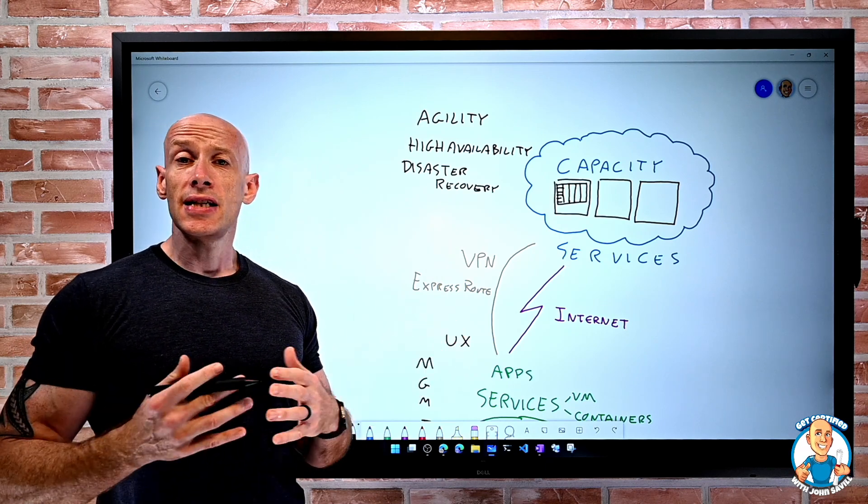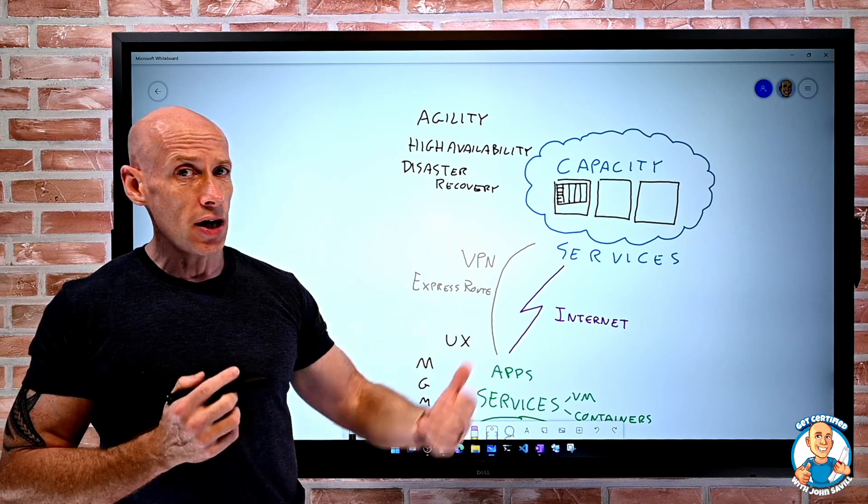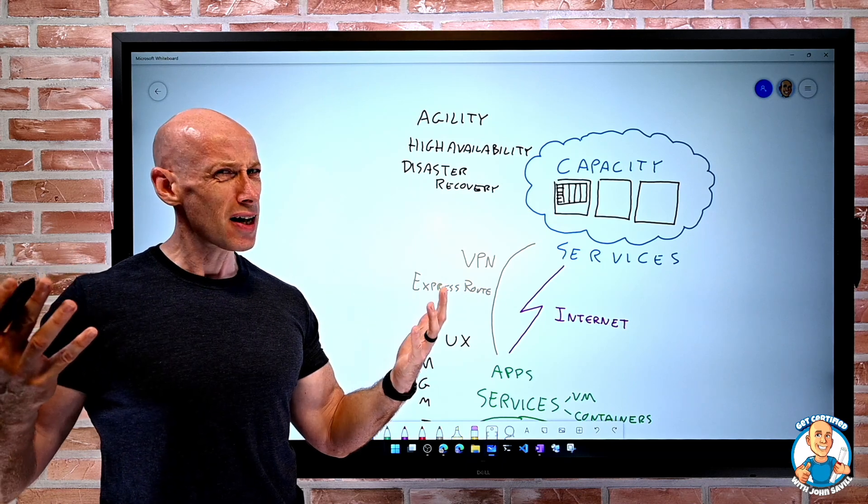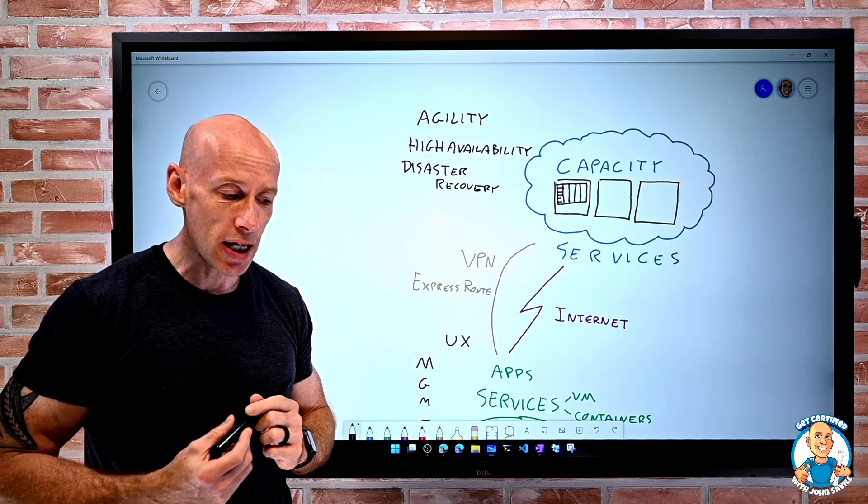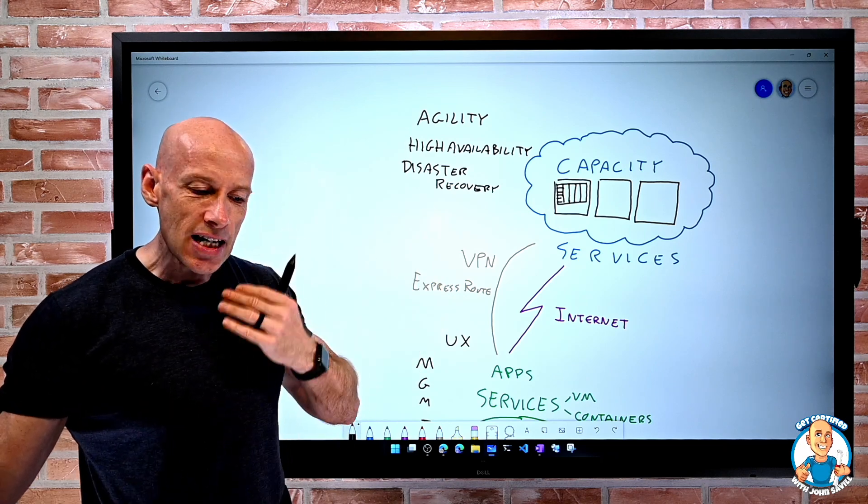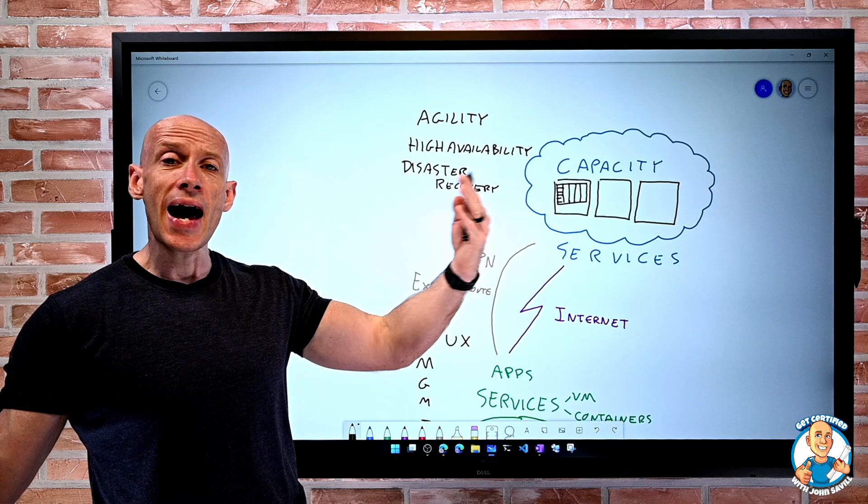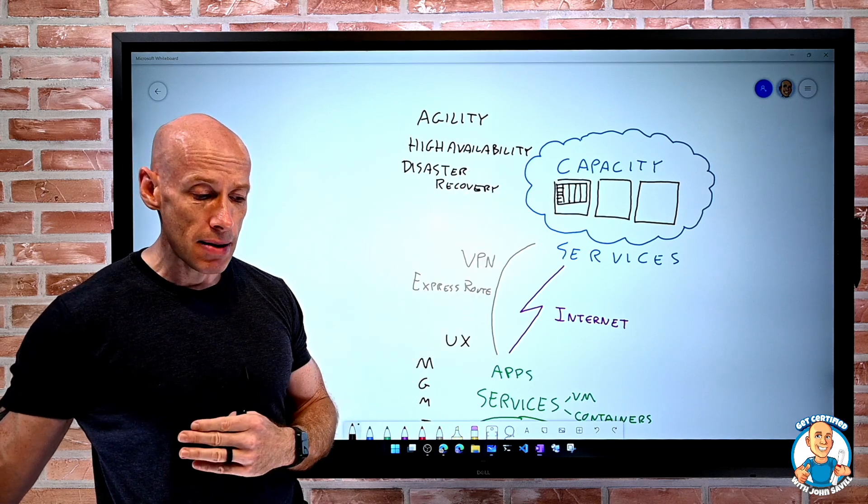Now, maybe that's native to the service. It has its own disaster recovery. It's not like a virtual machine. There's capabilities with Azure Site Recovery to even replicate virtual machines between regions and their state on disk. Maybe I can even run active-active. I can have instances running in multiple regions.